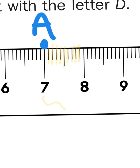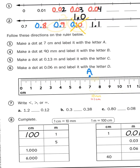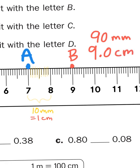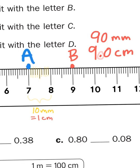So the distance between seven and eight is 10 millimeters, which equals one centimeter. So what is 90 millimeters? Well, that's just nine centimeters right here. I'll label that B. So 90 millimeters is the same as nine centimeters. The difference between 90 millimeters and nine centimeters is, of course, that decimal point right there.